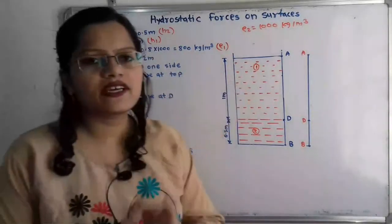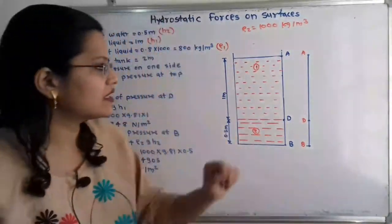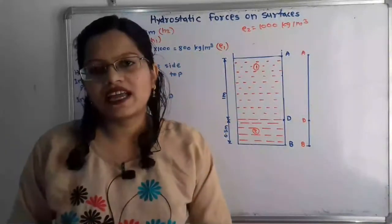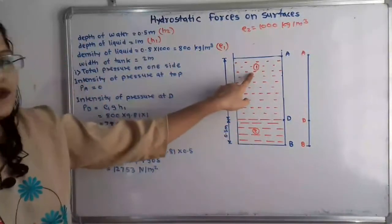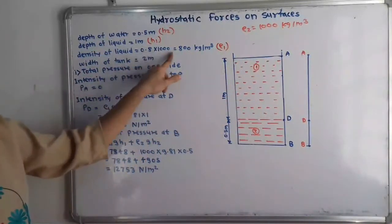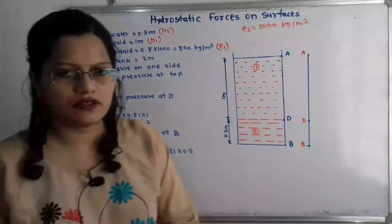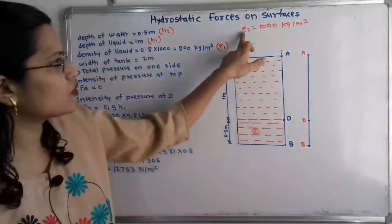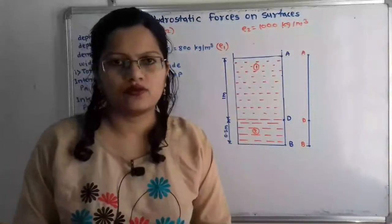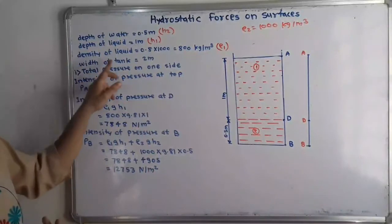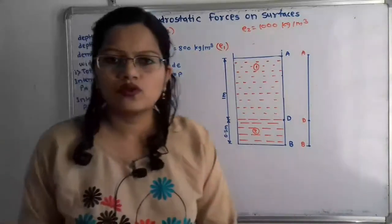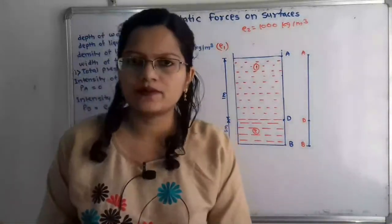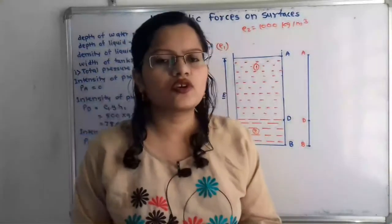The specific gravity of the liquid is 0.8, so we can calculate its density: rho1 = 0.8 × 1000 = 800 kg/m³. The density of water is rho2 = 1000 kg/m³. The width of the tank is 2 meters. We need to find the total pressure on one side of the tank, so we will draw the pressure diagram.